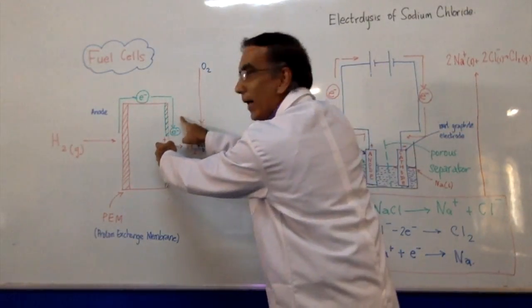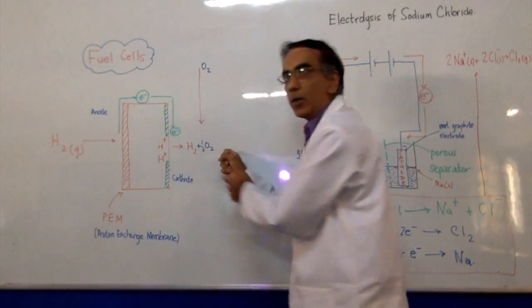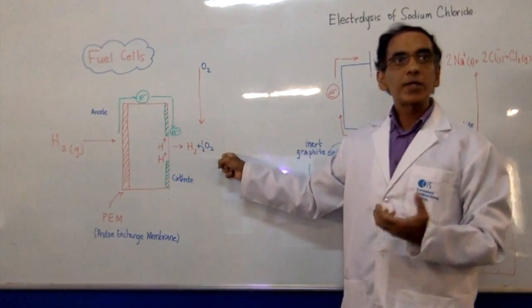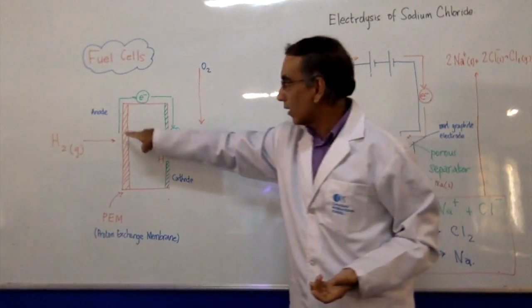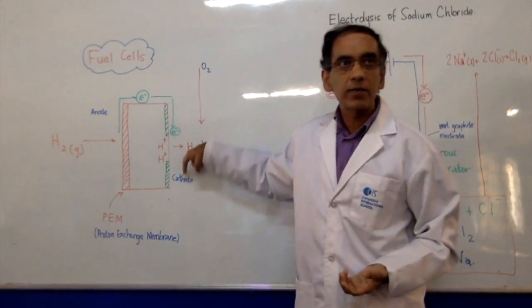Then they recombine on this side, with oxygen, and the waste product is water. What's the point of doing all of that? You create a flow of electrons, which is a source of electrical energy.